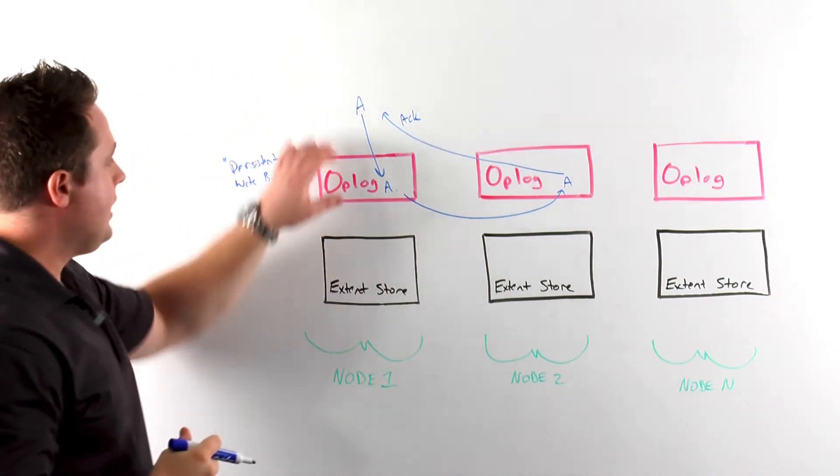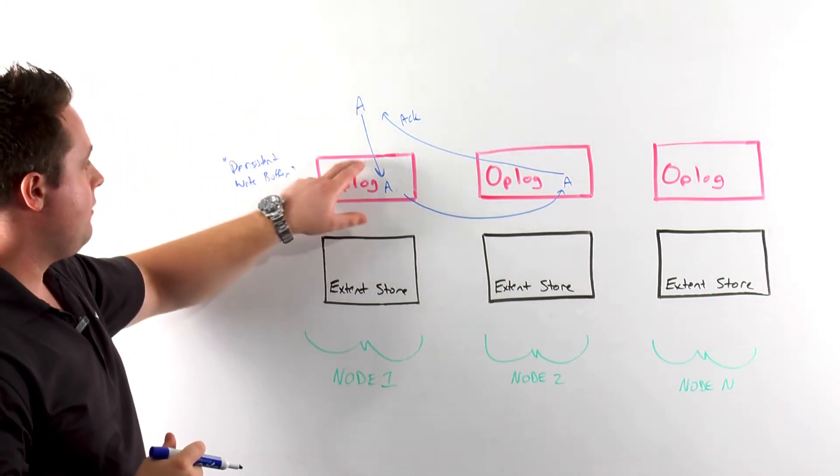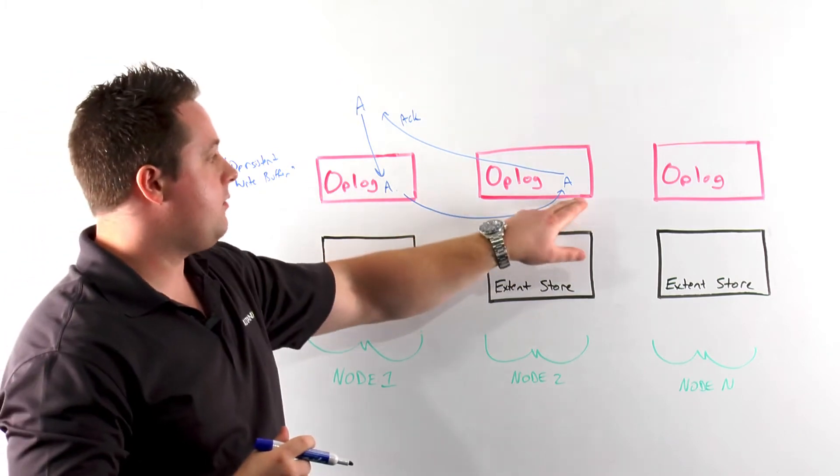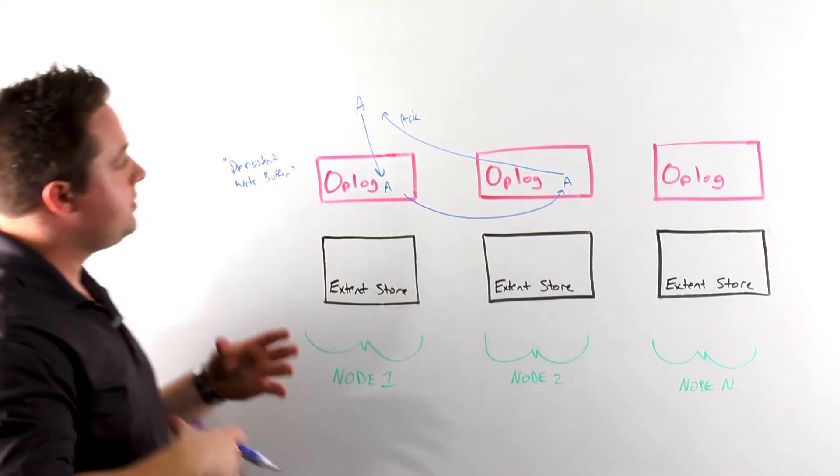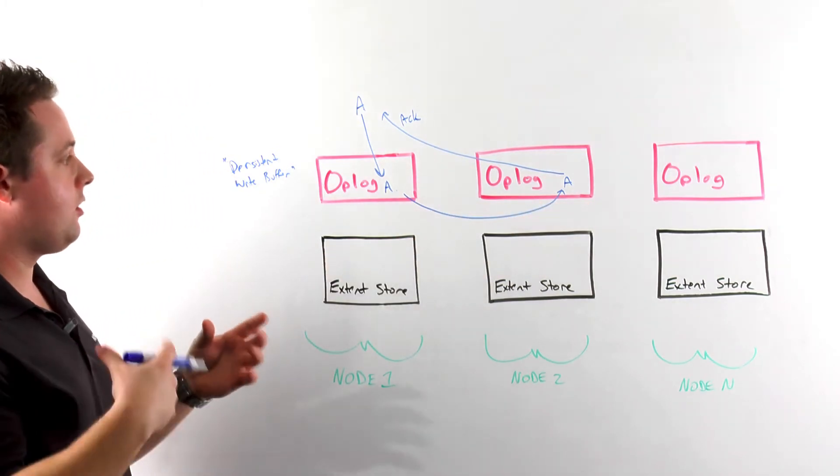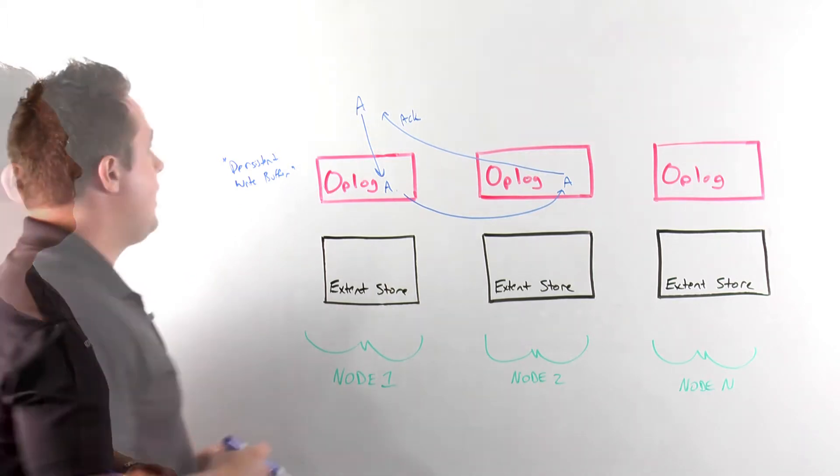This ensures that if a node were to go down, I would still have another copy of the data within the cluster. So this is a typical example of an RF2 or dual copy scenario for data.